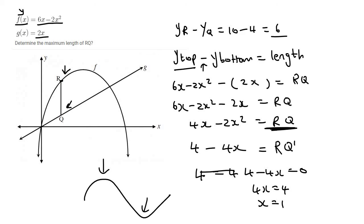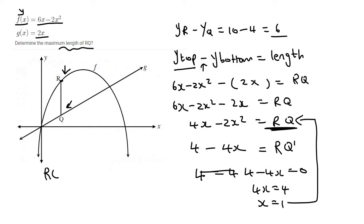Now guys, that's the x-value, but it's not the maximum length. What you then do is take that value and plug it back into the original formula for the length. So RQ = 4 times 1 minus 2 times 1 squared, and that gives us a length of 2.